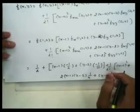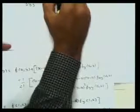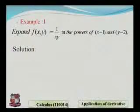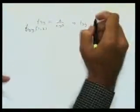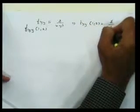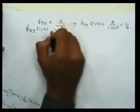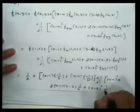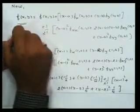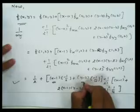Let us find fyy of (1,2). fyy(1,2) = 2/(1·2³) = 1/4. Also fy(1,2) = 2/(1+2) = 1/4. Replacing these values, fyy(1,2) = 1/4. This completes the Taylor series expansion of f(x,y) = 1/(xy) around the point (1,2).